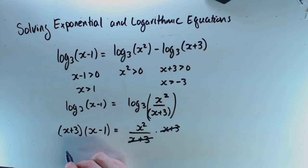And of course, when I do the expansion, I wind up with x squared minus x plus 3x, or plus 2x minus 3, is equal to x squared.